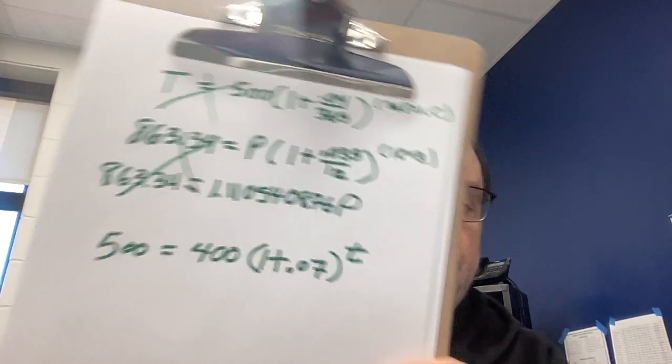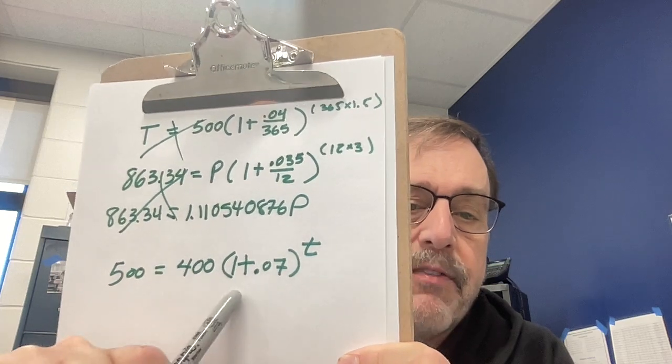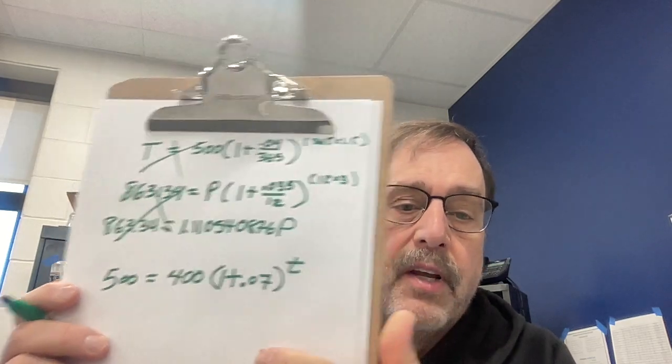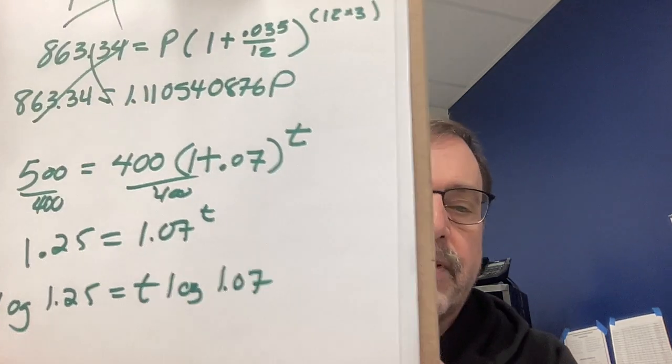Review video: we are solving for the time. You end up with $500, you started with $400, it was 7% annual interest. Divide both sides by 400. Oh my goodness, that's a log problem! Log both sides to get